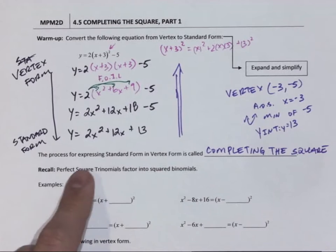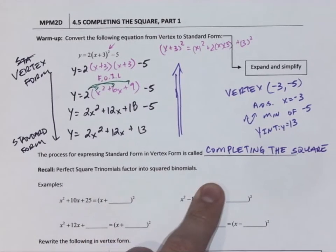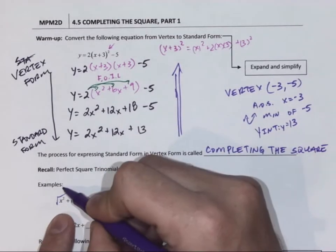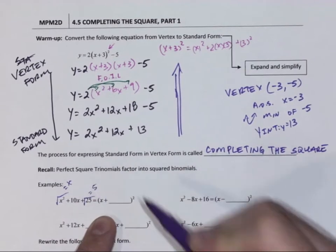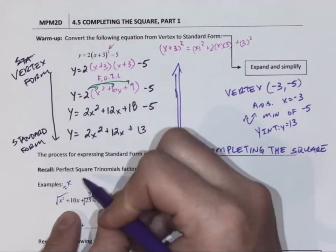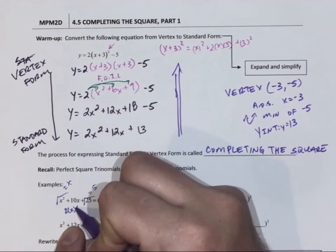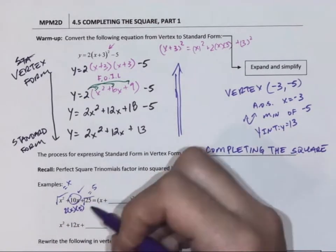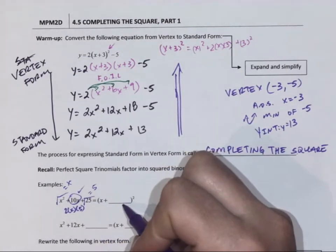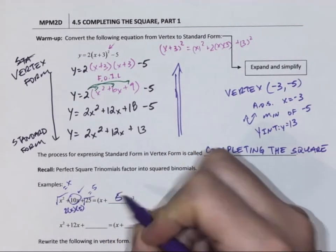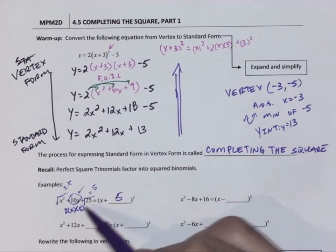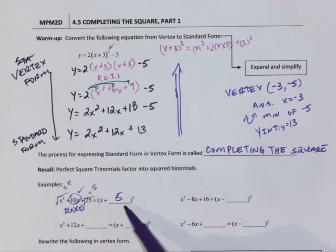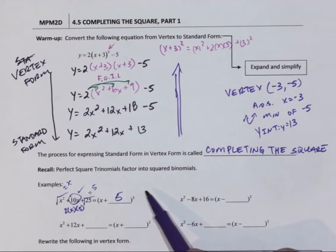So remember that perfect square trinomials factor into squared binomials. So how do we do that? We look at the square root of that, which is x. The square root of 25 is 5. And we want to see if 2 times x times 5 equals our middle term, which it does, then that is a perfect square. So as soon as we recognize that, that gets rewritten or factored into x plus 5 squared. So as long as we have a perfect square, and we make it a perfect square, we can put it into binomial squared.